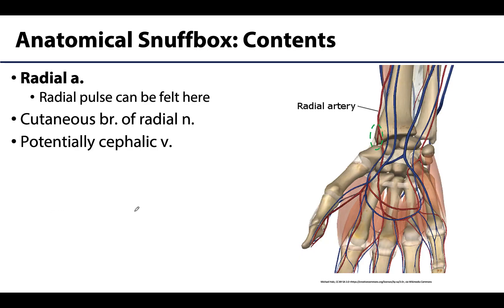Arguably the most important content of the anatomical snuff box is the radial artery. It lies in the floor of the snuff box and you can even feel the radial pulse here, though it isn't the most common location since it is a little deep. A more common site is on the anterior surface of the distal radius, just lateral to the tendon of the flexor carpi radialis, where the artery is covered only by skin and fascia — but you can certainly feel it within the snuff box as well.